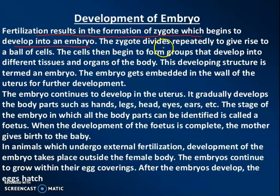The zygote is divided rapidly to give rise to a ball of cells. This ball-type structure forms groups of cells, which then begin to develop into different tissues.